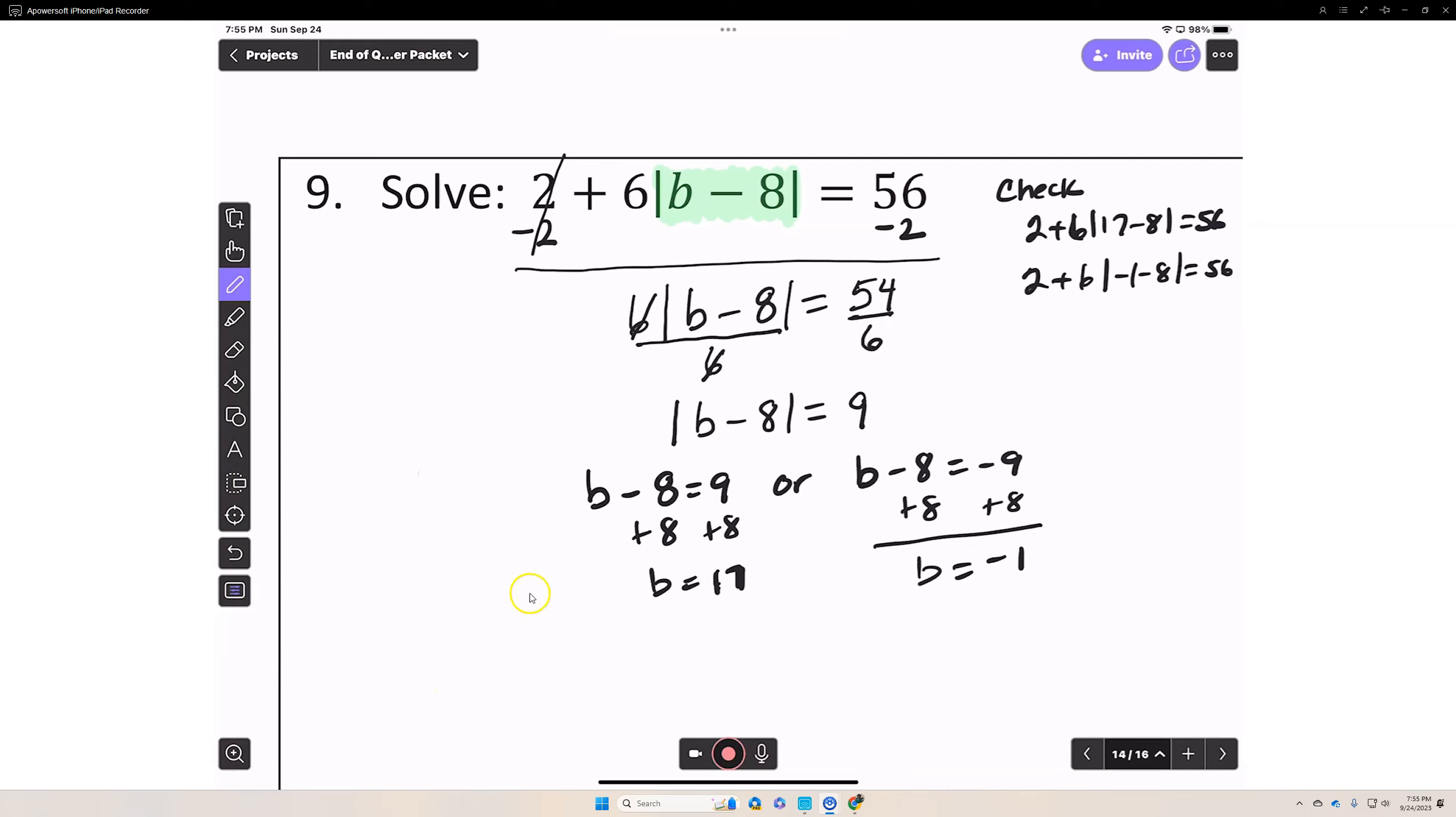The last step is to check, and all you have to do is substitute b with 17. 17 minus 8 is 9. Absolute value of 9 is 9 times 6, plus 2 is 56, and that does check.